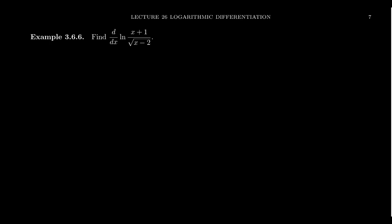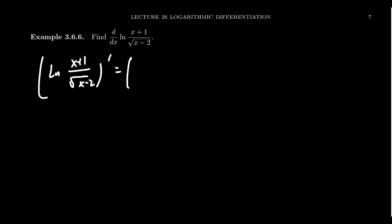How we're going to do that is expand the function using properties of logarithms. When you have a quotient inside of a logarithm, this is the same thing as taking a difference of two logs. So the natural log of x plus 1 over the square root of x minus 2, prime, can be expanded as the log of x plus 1 minus the log of the square root of x minus 2.